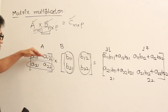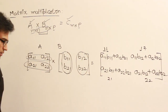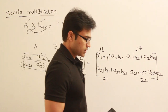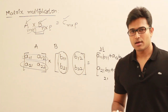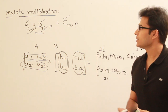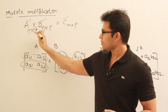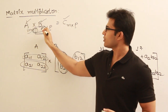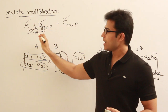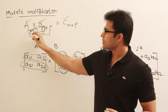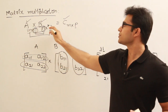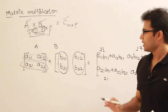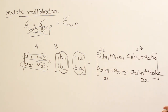That is why it is called row-by-column multiplication. Remember: we cannot multiply all matrices — they have to be conformable for multiplication, meaning the number of columns in the first matrix must equal the number of rows in the second matrix. The resulting matrix has the same number of rows as the first matrix and the same number of columns as the second. Now let's see the properties of multiplication.